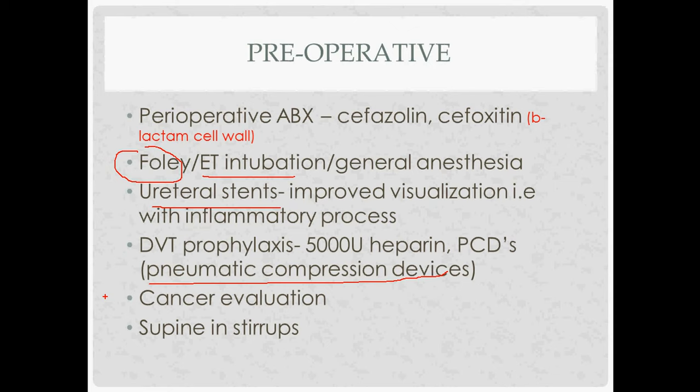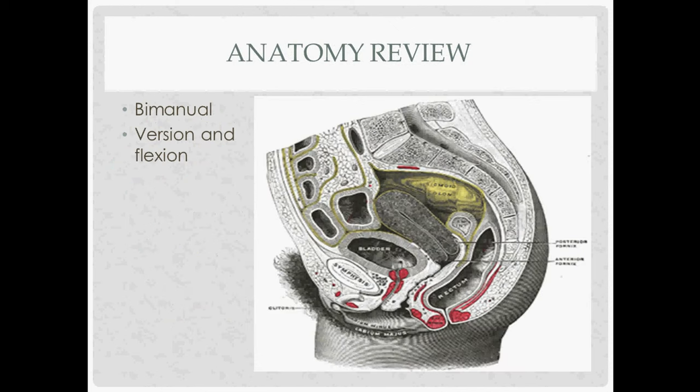If there are concerns about endometrial cancer — for example, a 35-year-old woman with abnormal vaginal bleeding — check the endometrial lining before the operation via D&C or targeted endometrial biopsies. Once pre-op is complete, the patient is placed supine in stirrups and the operation begins.